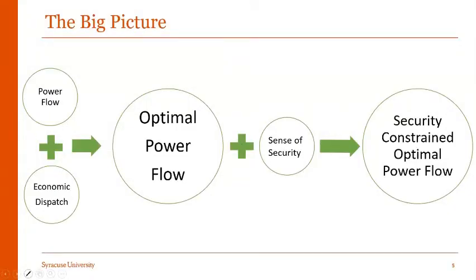As we saw from the last lecture, the big picture consists of power flow analysis combined with economic dispatch, giving us optimal power flow. When OPF is combined with a sense of security, it gives us security-constrained optimal power flow.